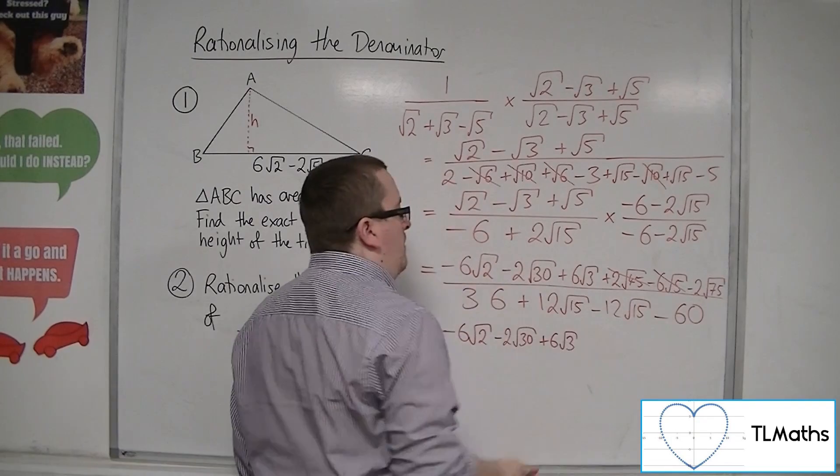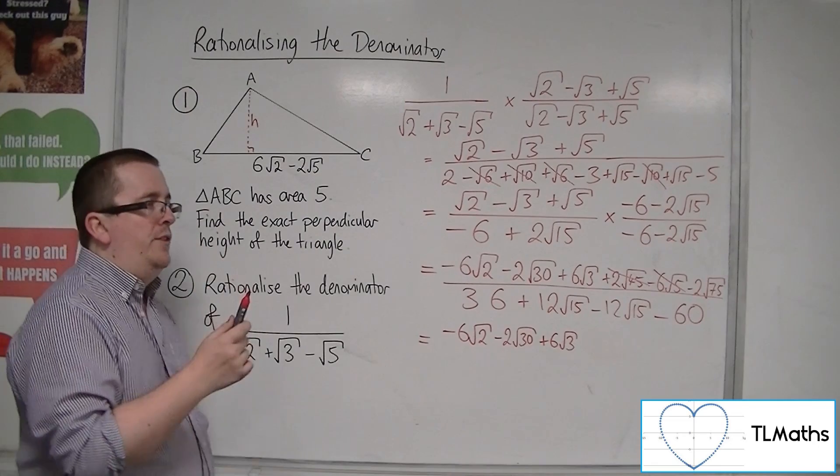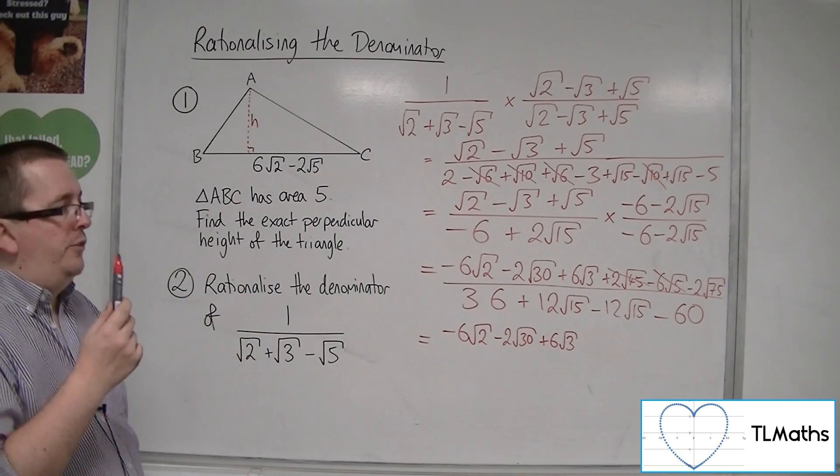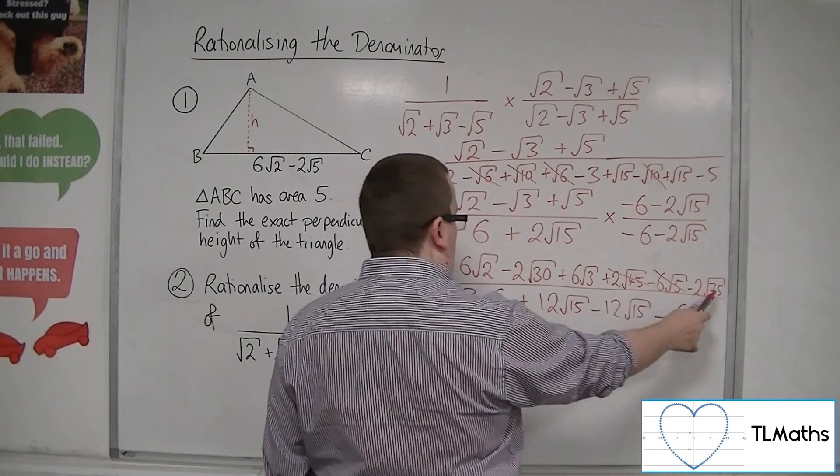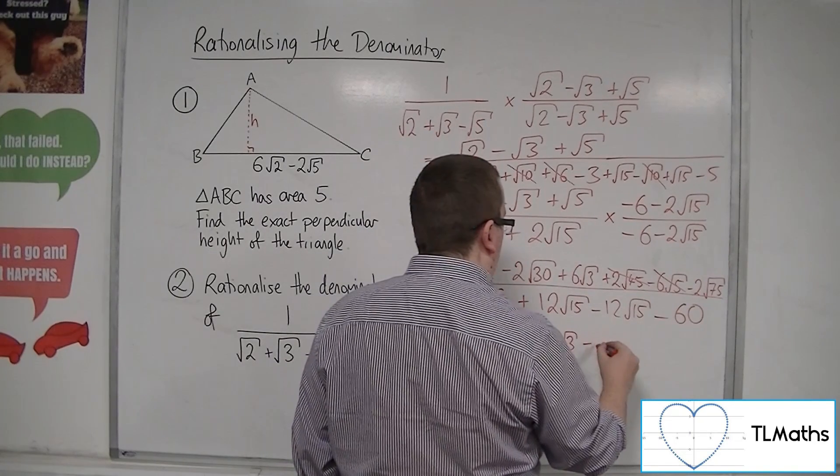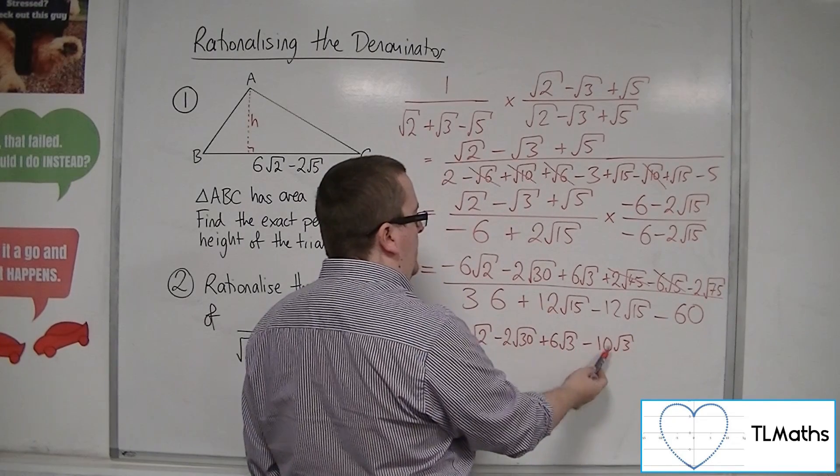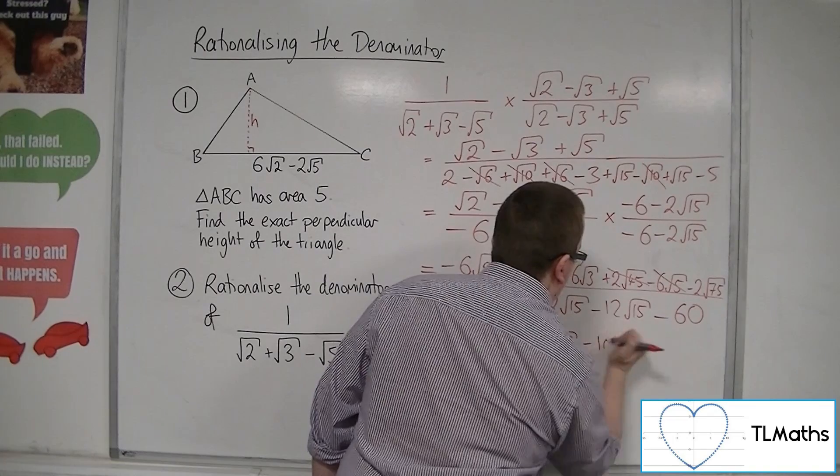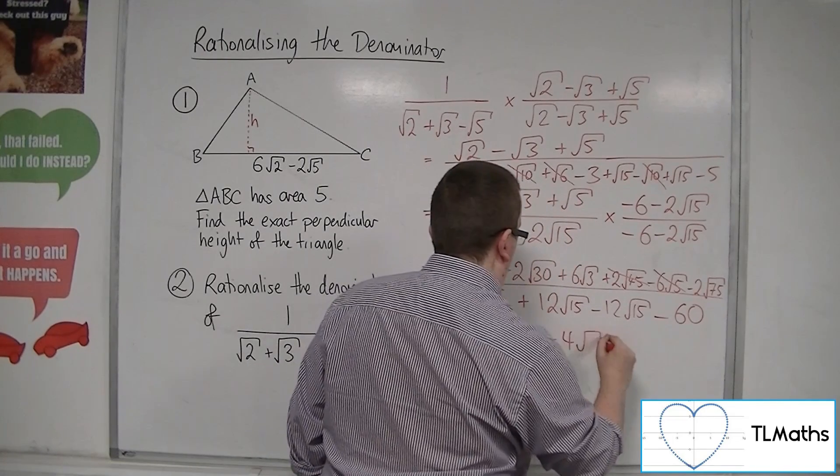And then we've got minus 2 root 75. Root 75 is 25 times 3. So, that's 5 root 3. So, that's minus 10 root 3. Now, we've got 6 root 3, take away 10 root 3. So, that's minus 4 root 3.